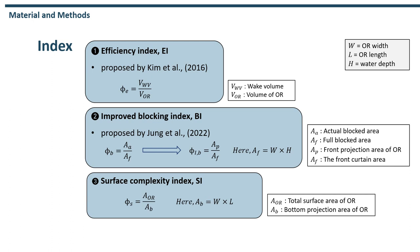Second, the blocking index. This index was introduced to understand the impact of the front projection area of the artificial reef. Here, the front curtain area AF is assumed to be rectangular. Third, the surface complexity index. This index means the total surface area of the artificial reef divided by the bottom projection area of the reef, where the bottom projection area AB is also assumed to be rectangular.